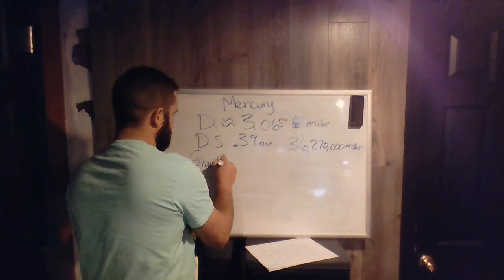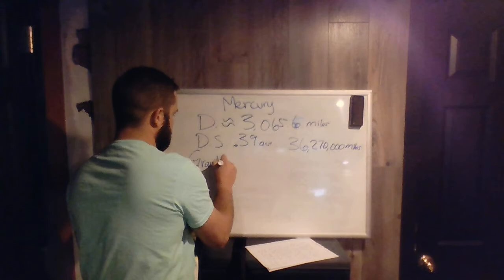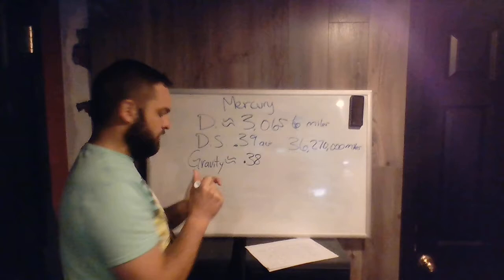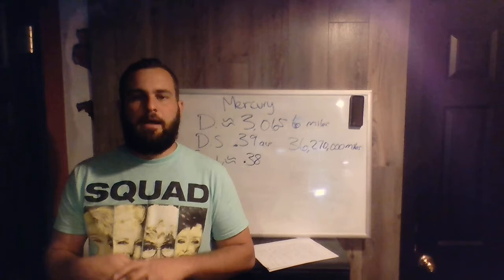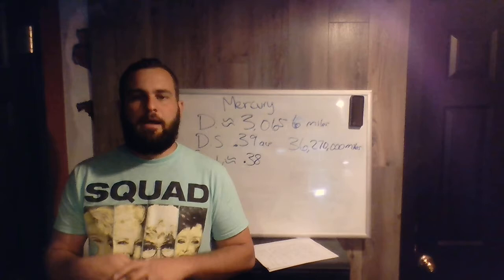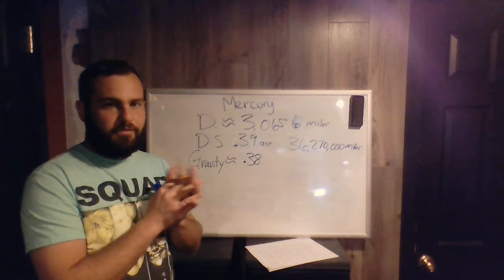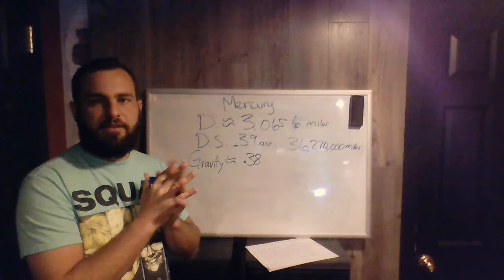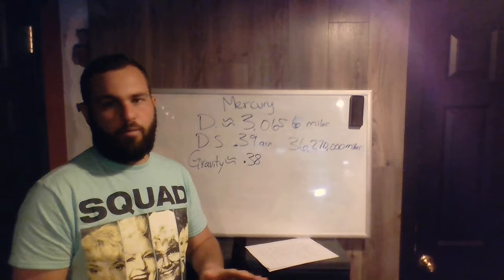We also know that the gravity of this particular planet is around 0.38% of what it is here on Earth. So if you weighed 100 pounds on Earth, you would weigh about 38 pounds on Mercury. That's that percentage of weight. We figured that out last week with all of you guys figuring out your weights and how much you would weigh on each planet.